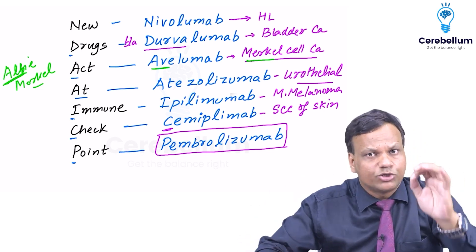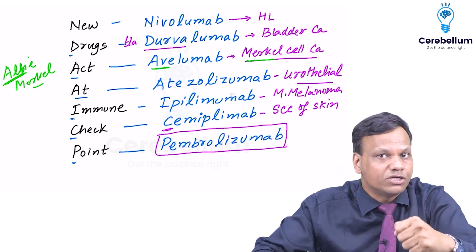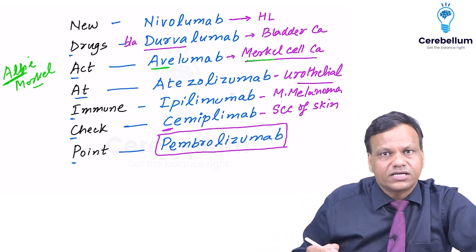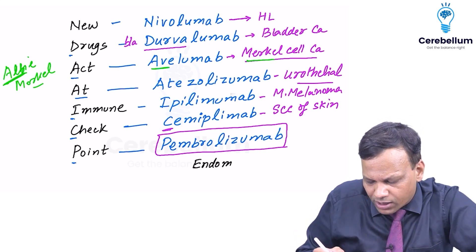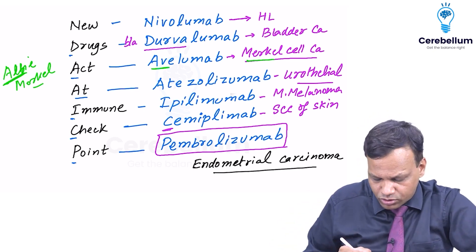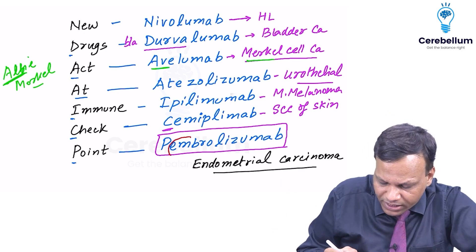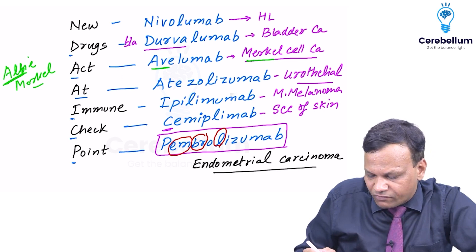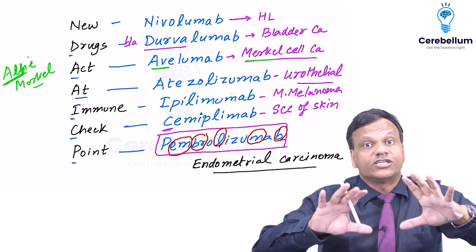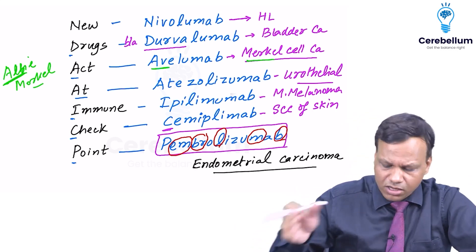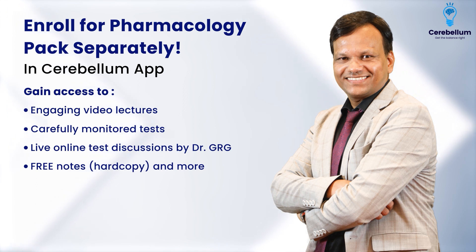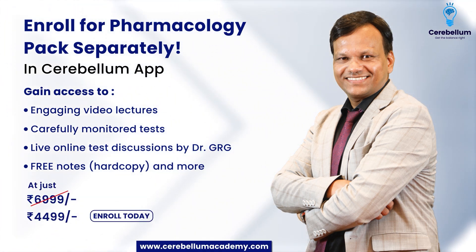Pembrolizumab is the drug with the maximum wide spectrum — it can be used for almost every cancer: renal cell carcinoma, hepatocellular carcinoma, breast cancer, malignant melanoma, T-cell lymphomas, and many more. The special thing to remember is it is also used for endometrial carcinoma — no other drug in this group is effective for endometrial carcinoma. So Pembrolizumab has a very wide spectrum. These are the important points regarding immune checkpoint inhibitors, covering the targeted anti-cancer drugs.